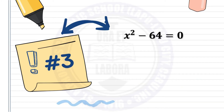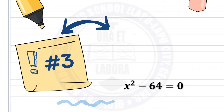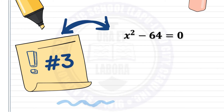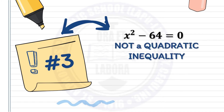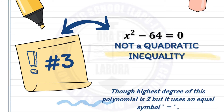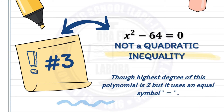Number 3: x squared minus 64 equals 0. This is not a quadratic inequality. Though the highest degree of this polynomial is 2, it uses an equal symbol, which makes it not a quadratic inequality.